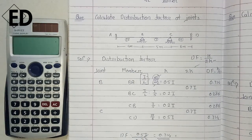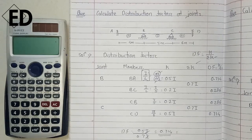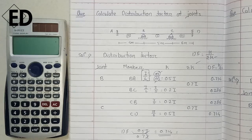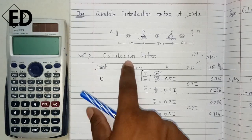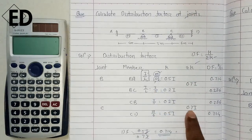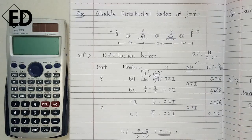Now moving towards the calculation for this continuous beam. I divide the work in tabular form because it is very simple to calculate in tabulation. The columns are: joint, rotational stiffness, sum of rotational stiffness, and distribution factor — which is nothing but the ratio of rotational stiffness to the summation of rotational stiffness.